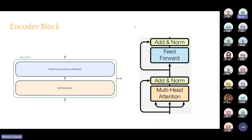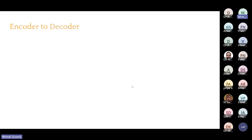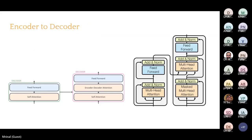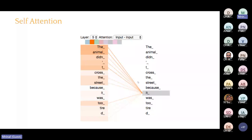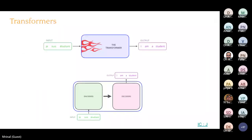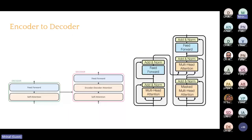The encoder block: input comes in, goes through a self-attention block, then through a feed-forward neural network, and comes out. In the detailed picture you can see multi-head attention instead of simple self-attention. Self-attention is where you put weight on all the words in the input to get the combined vector. From the encoder side, the information goes to the decoder. So we have encoders and decoders. Now let us understand what is self-attention in the encoder. There are three input vectors: x1, x2, x3.